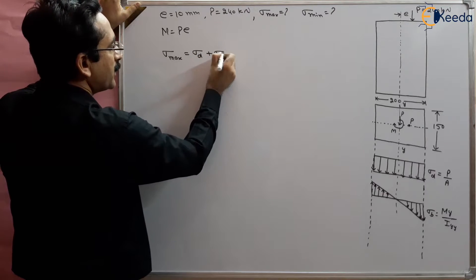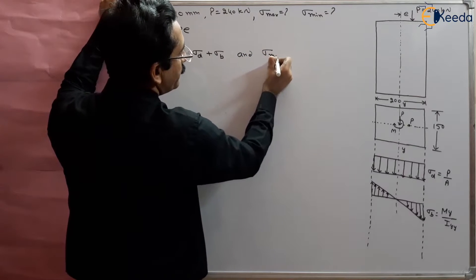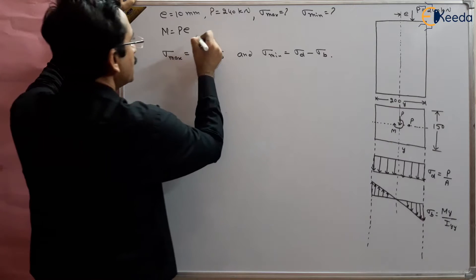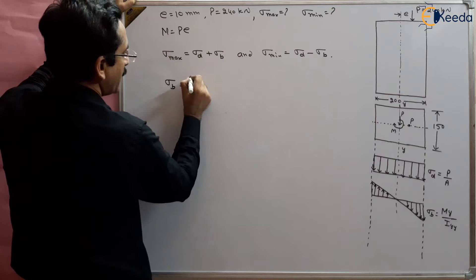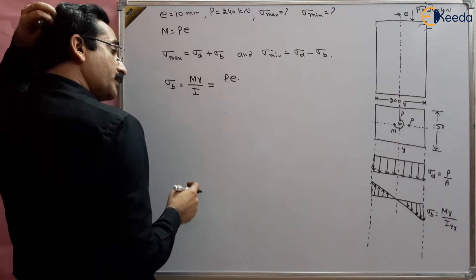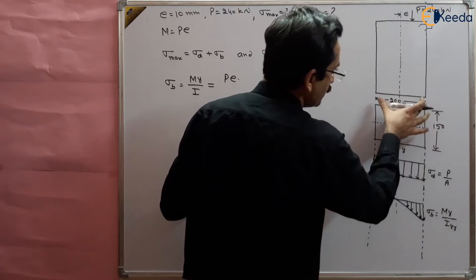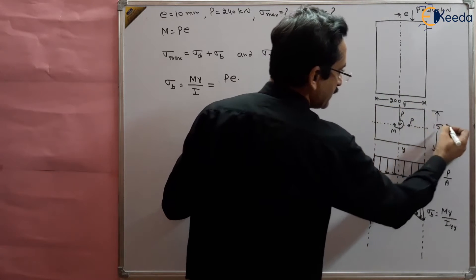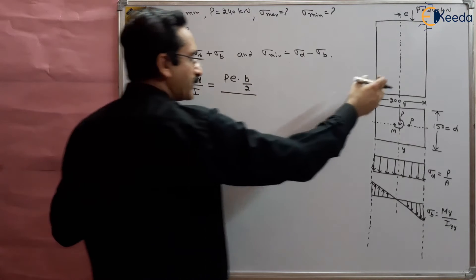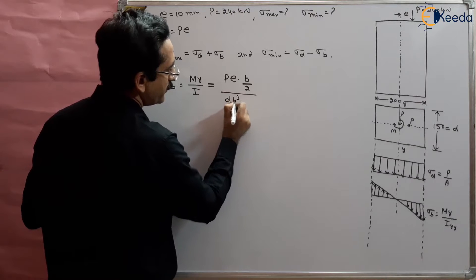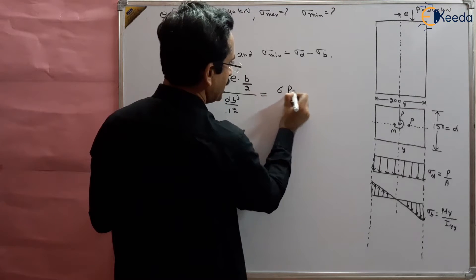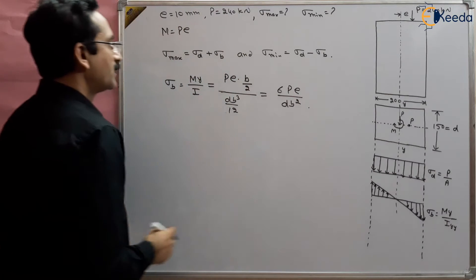So Sigma max = Sigma D + Sigma B, and Sigma min = Sigma D − Sigma B. Here Sigma B = M·Y / I = P·E·(B/2) / (D·B³/12), which simplifies to 6PE / (D·B²). This is the bending stress formula. The direct stress Sigma D = P / Area.